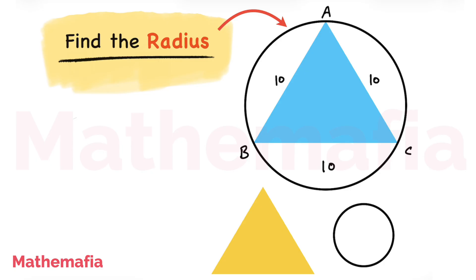To solve this problem, we are going to use two concepts: one related to equilateral triangles and another related to circles. In any equilateral triangle, if we draw a perpendicular from any vertex to the opposite side of the triangle, this perpendicular will bisect this side and this perpendicular will also bisect this angle.